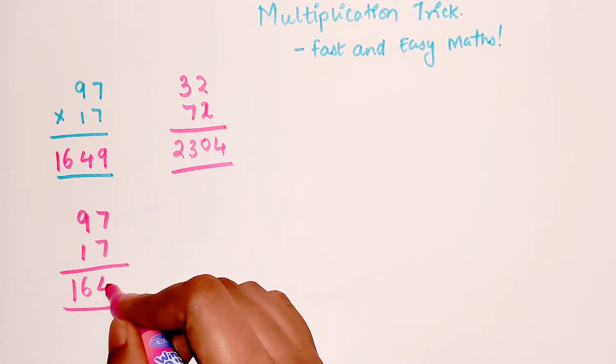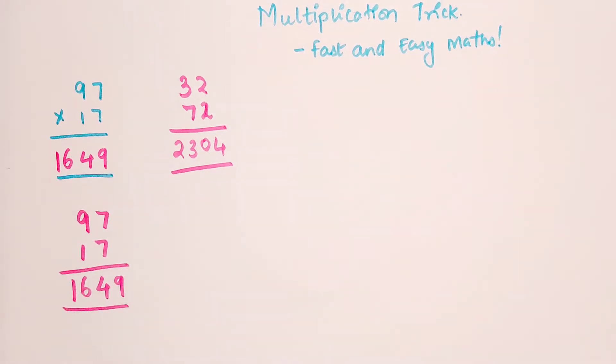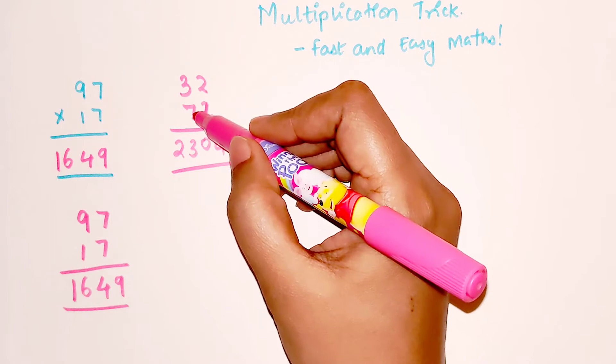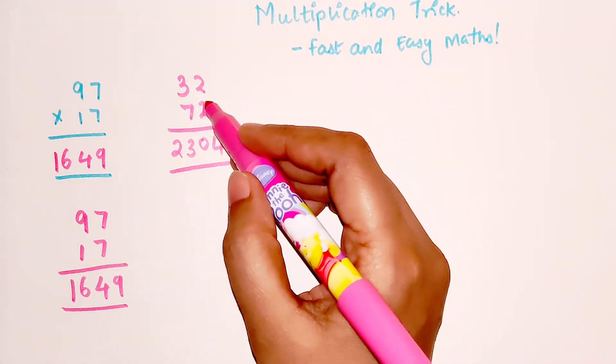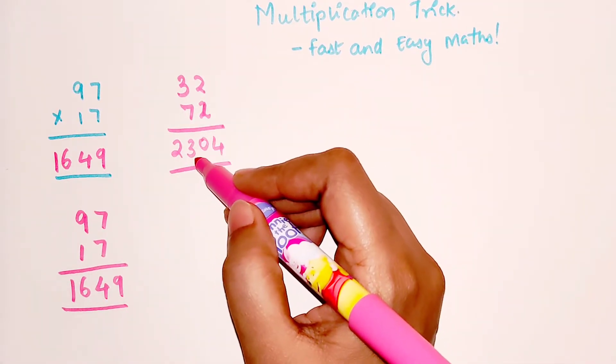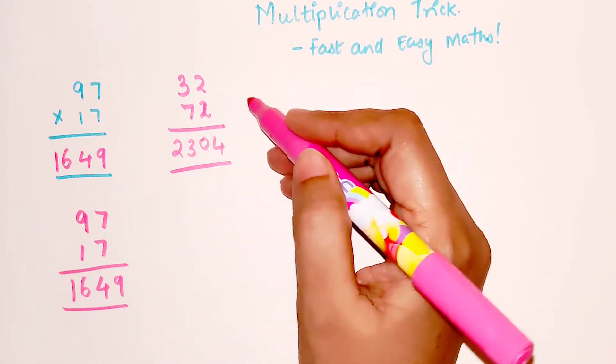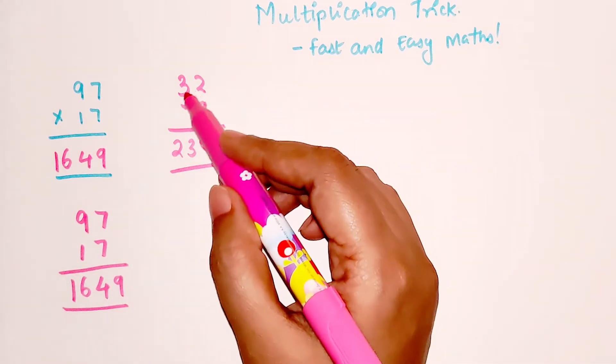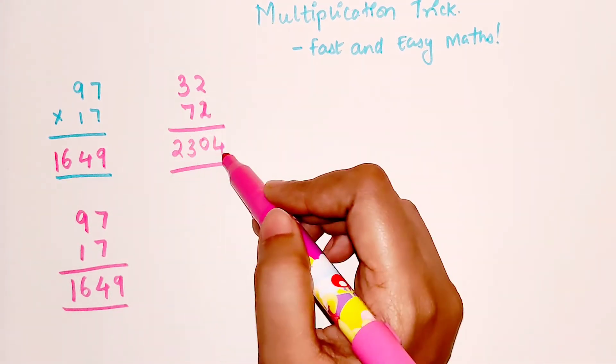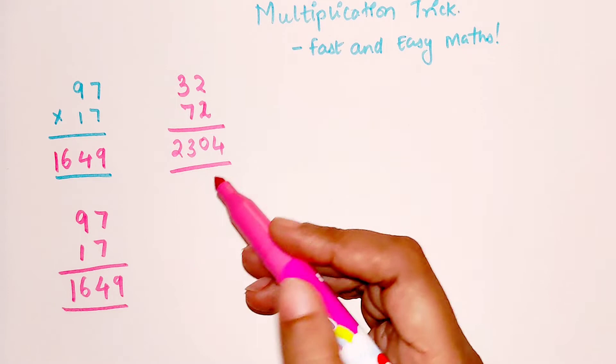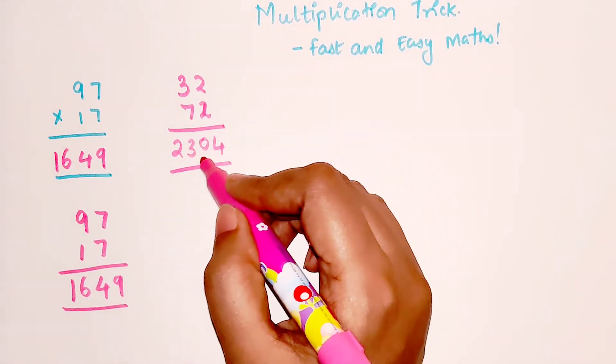Similarly, 3 into 7 gets you 21, add 2 to it you get 23. And the next part will be square of 2 which is 4. But since this is two digit into two digit, your answer will be in the form of four digits, so instead of writing just 4 we'll write 04.